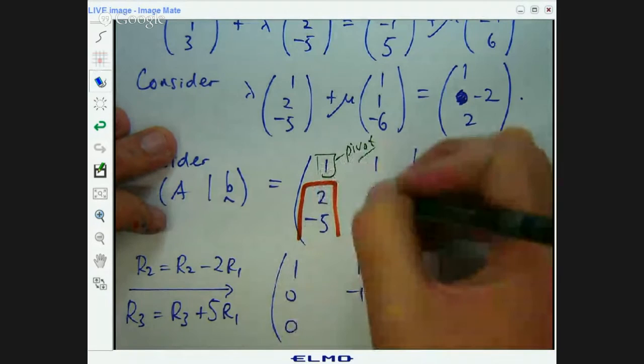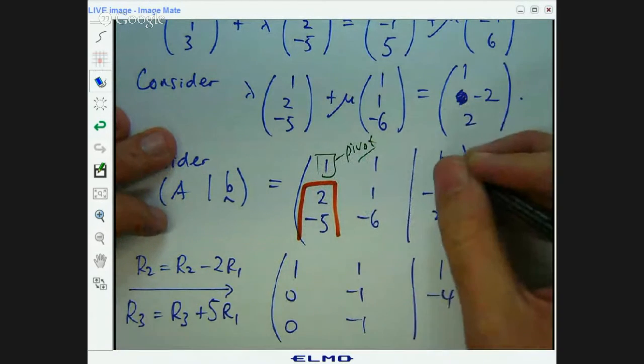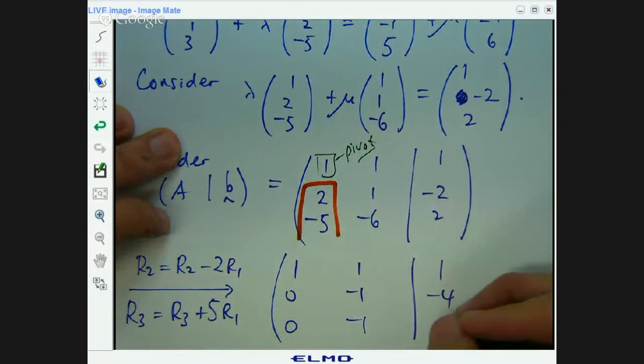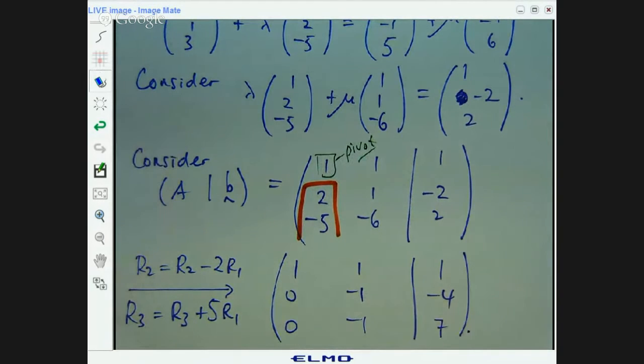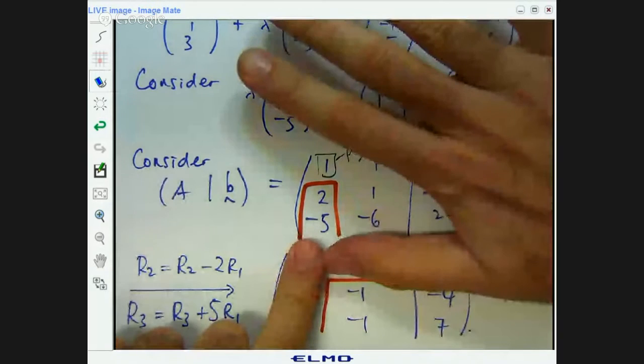I'm going to get negative five plus five times one, zero. Negative six plus five, that'll be negative one. Two plus five, which will give you seven. We're almost finished now.